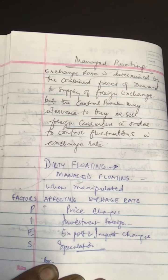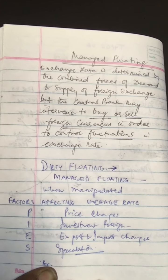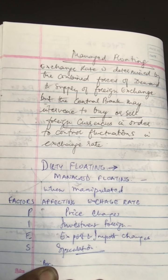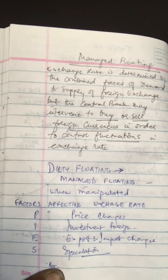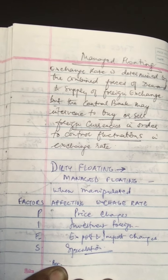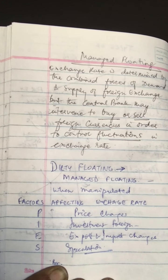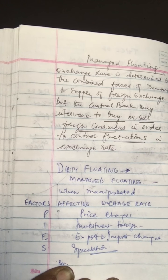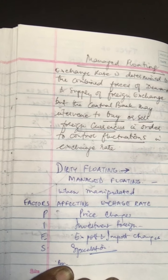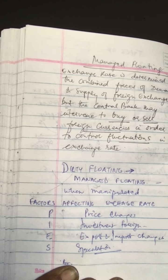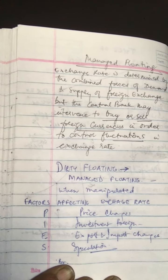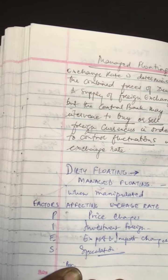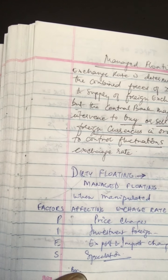So the acronym is P-I-E-S-B-R: P stands for prices — change in prices; I stands for investment — foreign investment; E stands for exports and import changes; S stands for speculation; and BR stands for bank rate.